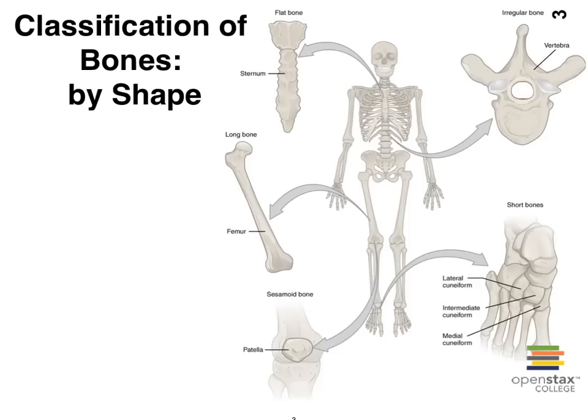Your textbook also talks about sesamoid bones, which are tiny bones that vary between humans — some of us have more of them, some fewer, in different areas. The only sesamoid bone consistent among all of us is the patella, or kneecap. A sesamoid bone tends to protect your muscles and tendons from rubbing against other bone tissue.